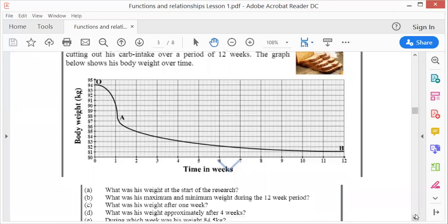What was his weight after one week? There is one week. So I go up and across, oh, 90 kilograms. What was his weight approximately after four weeks? Now, why did it say approximately? Because you can't see exactly. So there's four weeks. Go across, about 83 kilograms.